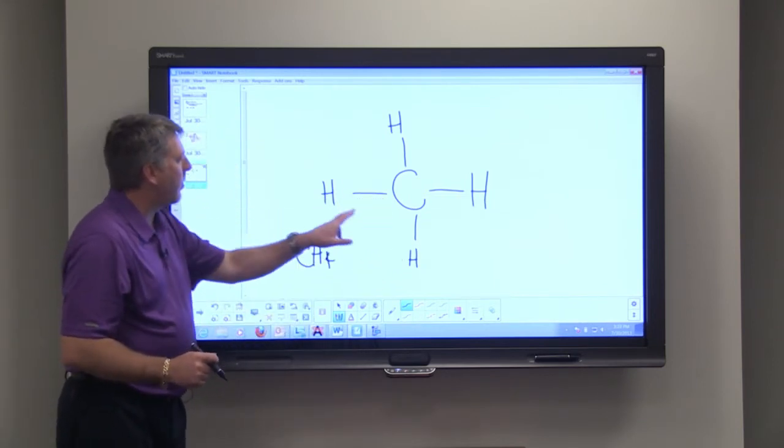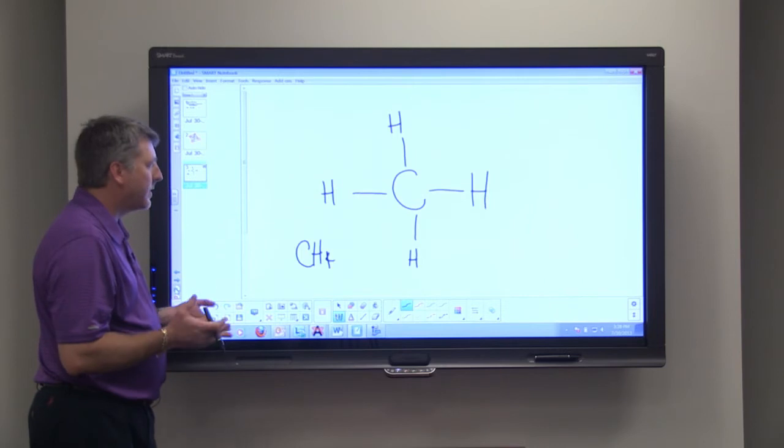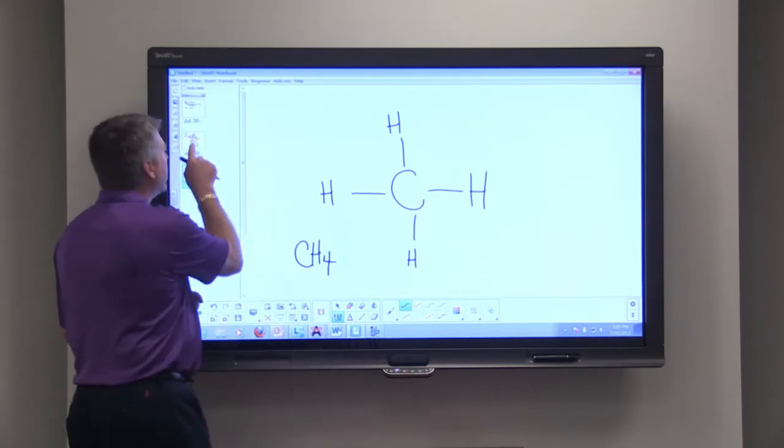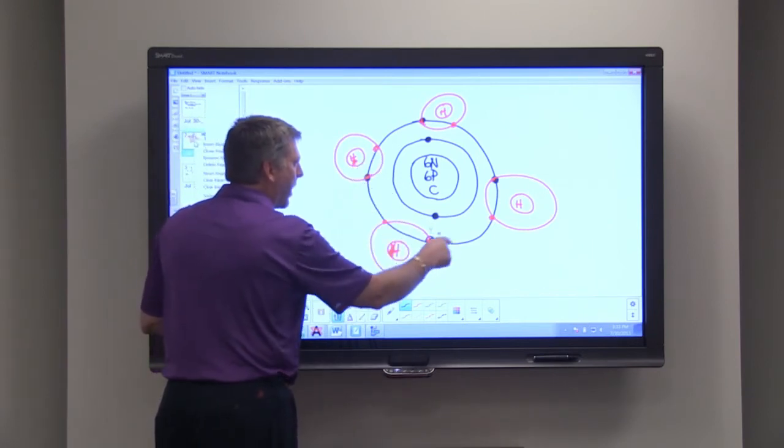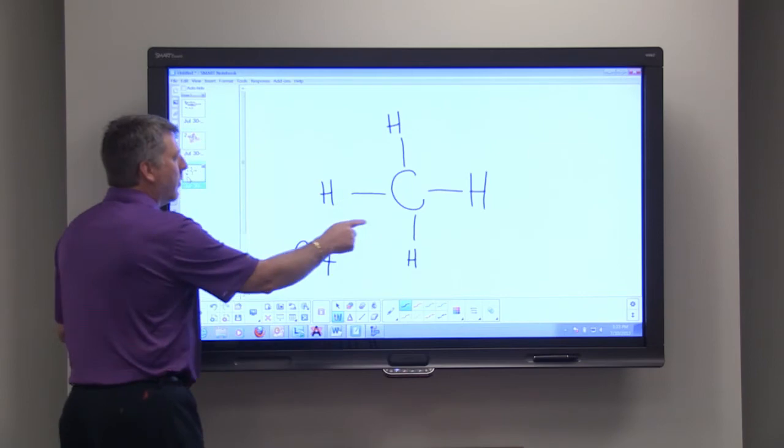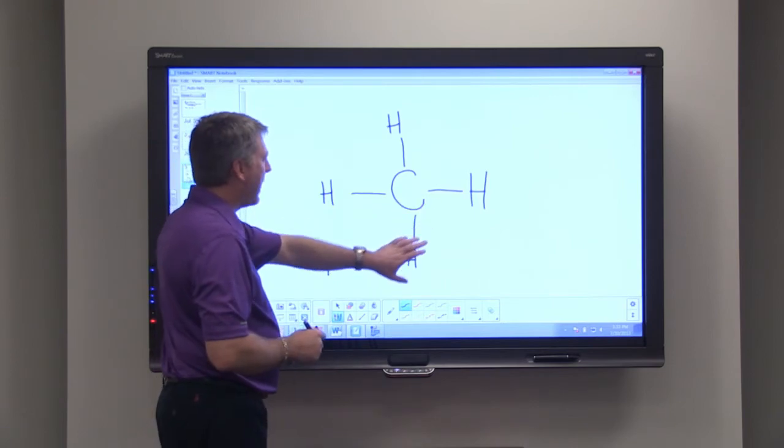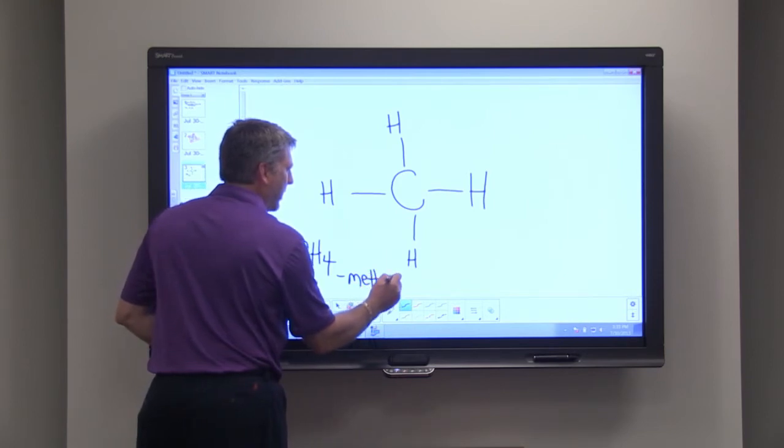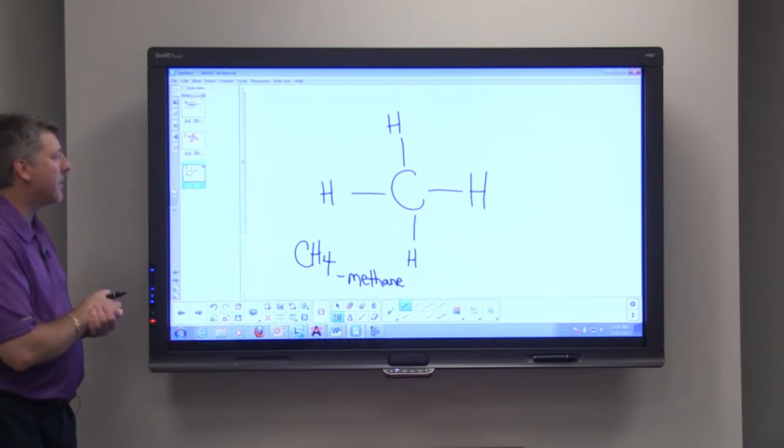So one carbon with four hydrogens. This is actually the simplest of all organic compounds because it just contains carbon and hydrogen and of course we just have one carbon there. The only difference is instead of drawing all the electrons, we're just letting a line represent a shared pair of electrons. So this is CH4, which is also known as methane.